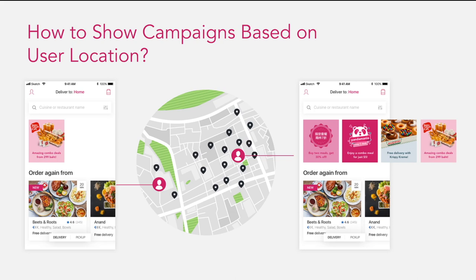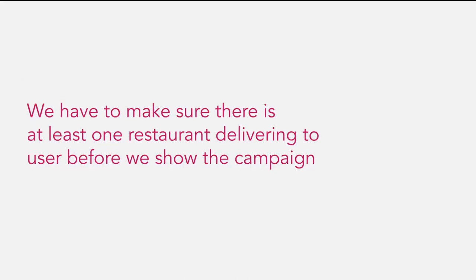Now that we have enough context, we need to answer this question: how do we show campaigns based on user location? We have to make sure there is at least one restaurant delivering to the user before we can show the campaign. So no restaurants delivering to you means no campaigns shown to you.